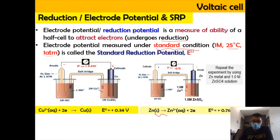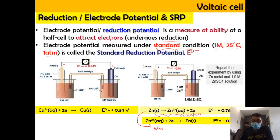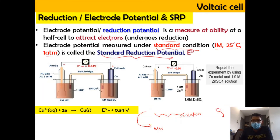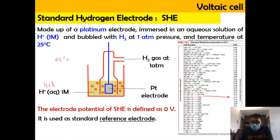However, the zinc measurement is an oxidation process, so we need to change that into reduction. We flip the equation, and the sign changes to negative. So the standard reduction potential for zinc becomes −0.76 V.